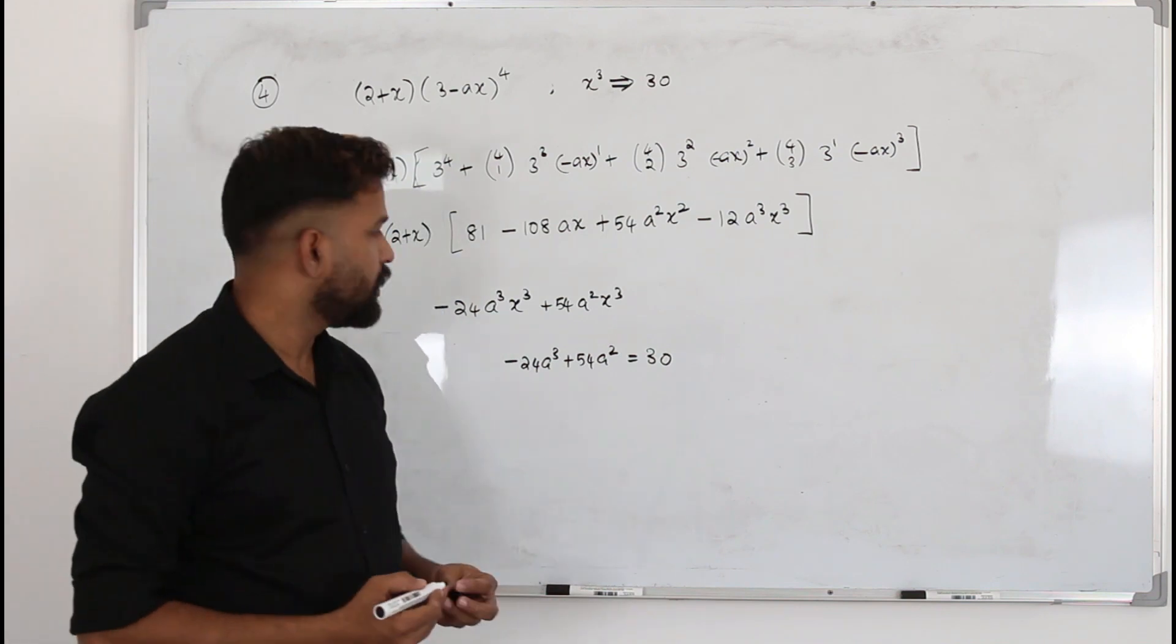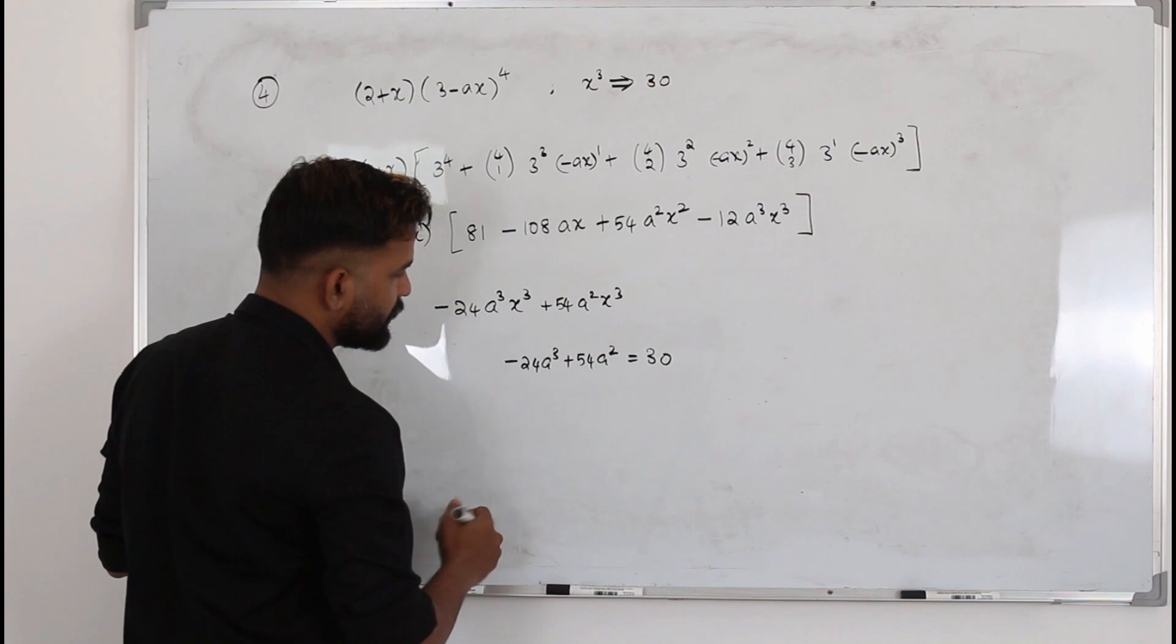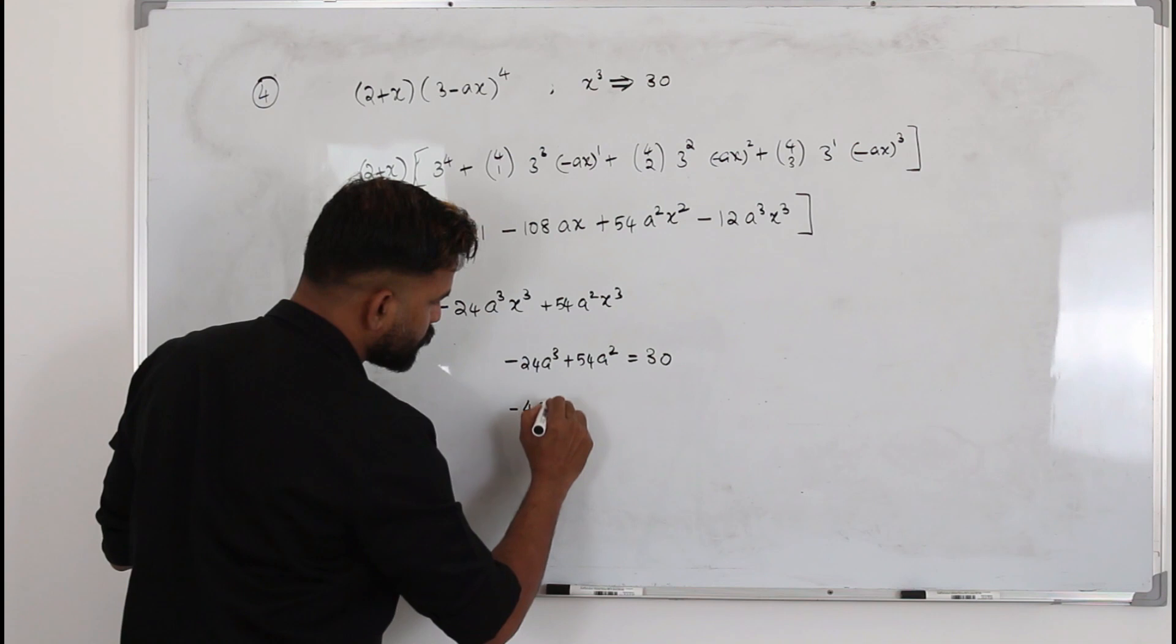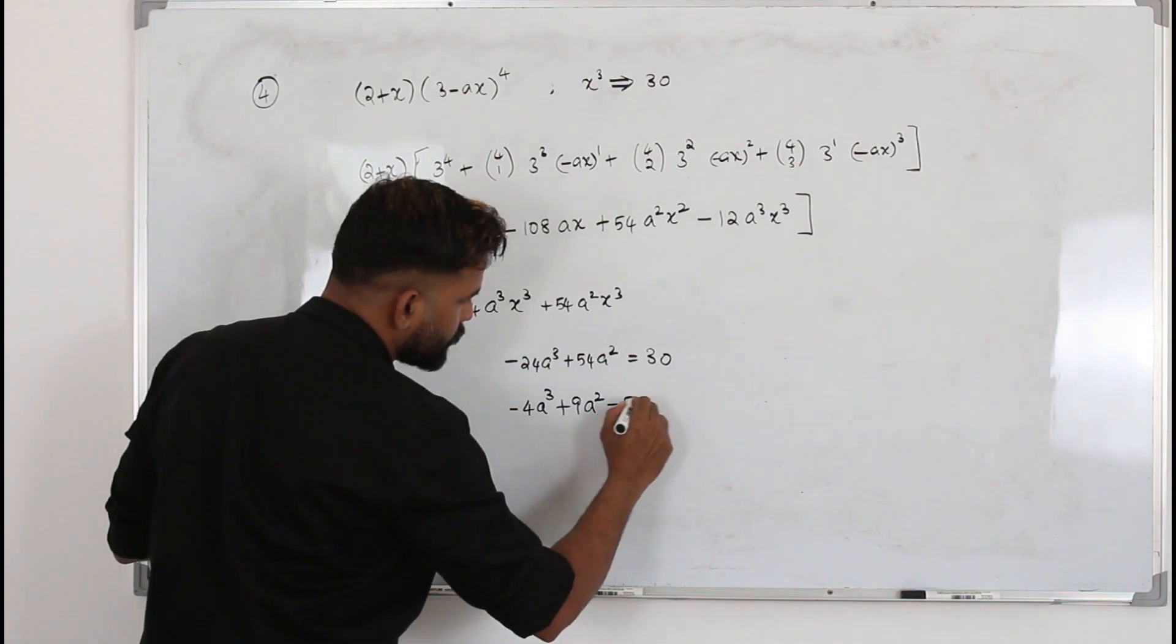Solve this, you'll get the solution already. Put this 30 here and divide everything by 6. So you'll have -4a³ + 9a² = 5.